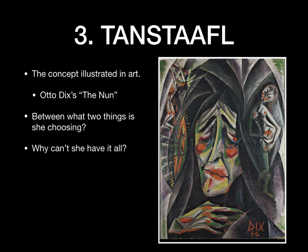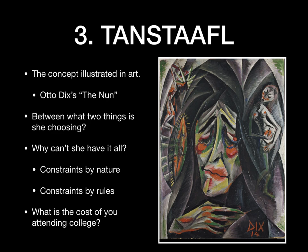She can't have it all. There are constraints by nature — some things we simply can't have — and constraints by rules that limit what we can do, and these will always be costs. What is the cost of attending college? There are many things to consider: tuition and books are explicit opportunity costs. Room and board, however, is not an opportunity cost, because you would have had to pay somewhere to live and eat anyway. This is the end of part one — we'll cover principles four, five, six, and seven in part two.